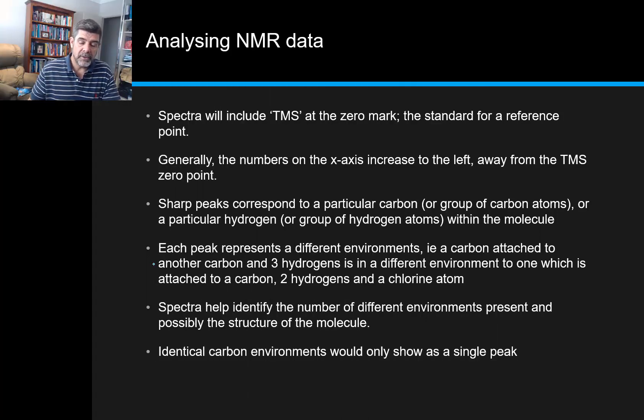On most occasions, spectra will include this TMS trimethylsilane, which is at the zero mark as a standard reference point. So you will sometimes see just a little peak at the zero mark, which is just telling you that the standard has been used. What happens then is the numbers will move away from that zero mark to the left on the x-axis, and the sharp peaks will correspond to particular carbons or hydrogens within the molecule. Every different peak represents a different environment. For carbon, that's easy because it starts to tell us how many different types of carbons there are at an absolute minimum. Two peaks means a minimum of two carbons and potentially more. And the hydrogens will split into those little peak clusters, and those will tell us about how many different hydrogens there are in the neighboring atom.